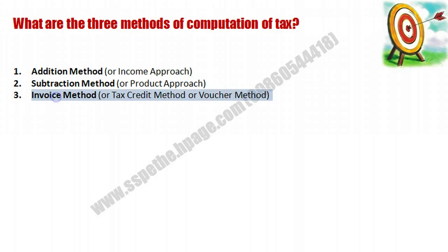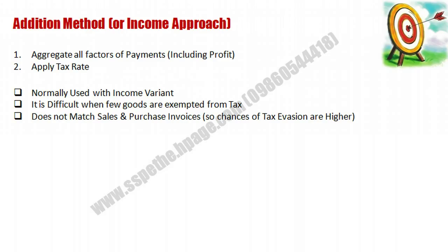Now we will discuss each method in detail. First, the addition method. In this method, we aggregate all the factors of payment — salary, wages, rent — incurred during manufacturing. You aggregate all the factors including the profit margin, and then apply the tax rate on that total amount.